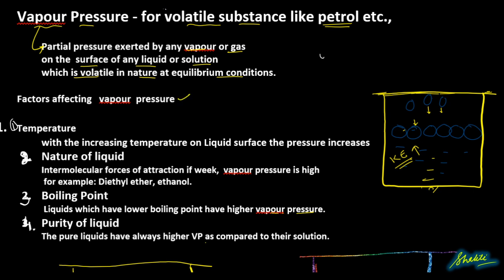The first factor affecting vapor pressure is temperature. With the increase in temperature on a liquid surface, the pressure increases. When we heat a system containing a volatile solution, kinetic energy inside the liquid increases, causing more and more molecules to escape, which increases the vapor pressure over the surface of the liquid.